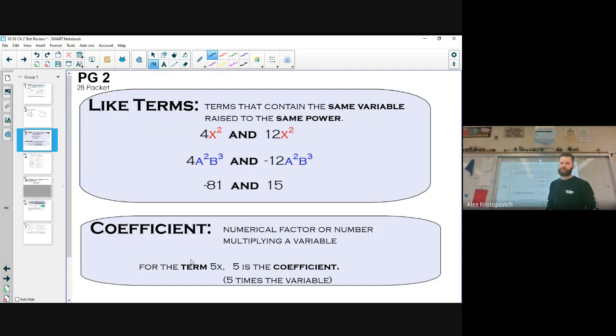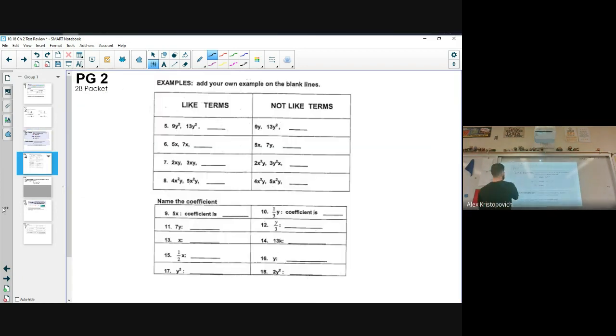Another word that you would like to know is coefficient, okay? So a coefficient is a numerical factor or a number multiplying a variable. Basically, it's the number being multiplied by a variable. So for instance, if we have the term 5x right here, 5 is the coefficient. It's 5 times the variable. So the number that is attached to the variable is known as the coefficient. All right.